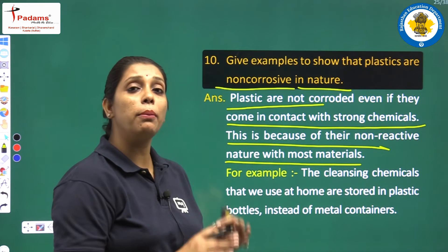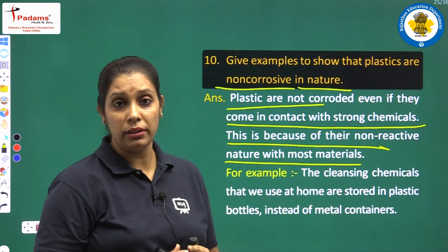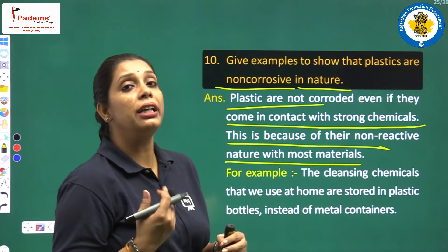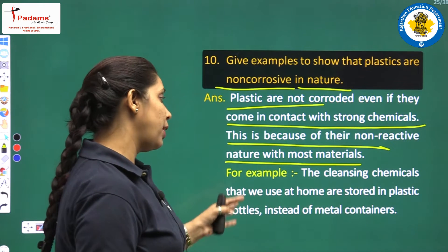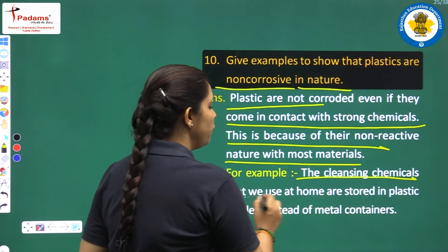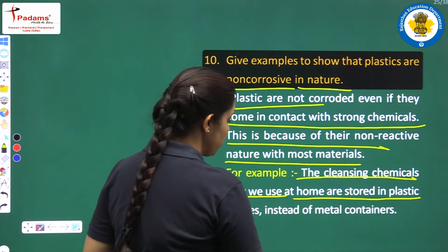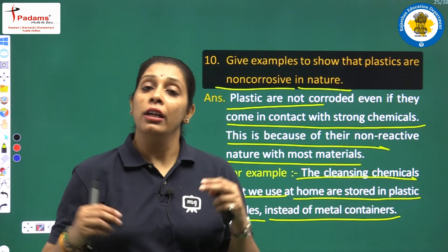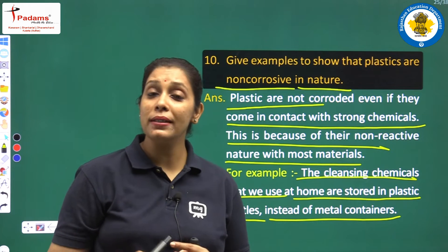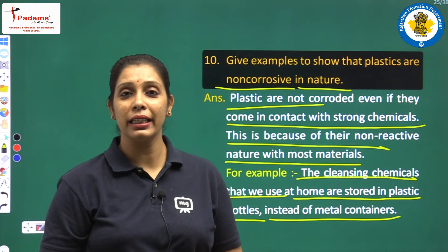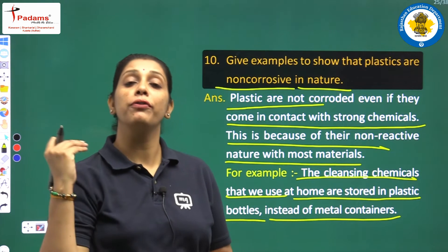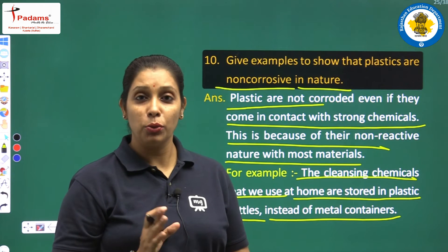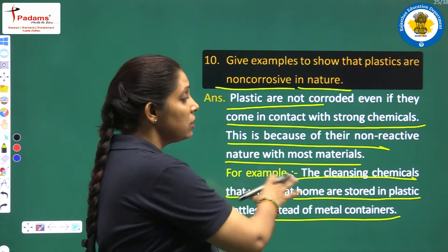There are lots of examples we can observe in our surroundings. The cleansing chemicals that we use at home are stored in plastic bottles instead of metal containers. The chemicals we use to clean bathrooms, sinks, or wash basins — whether acid or liquid detergent — they are all capped in plastic bottles.